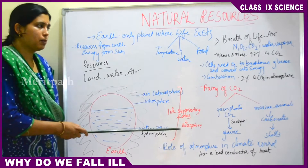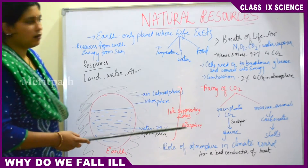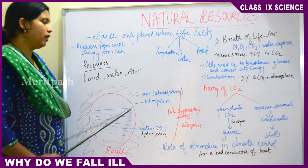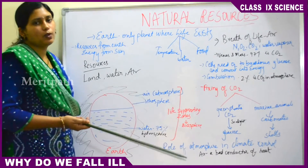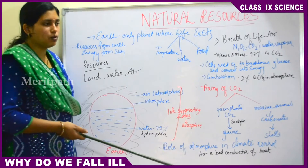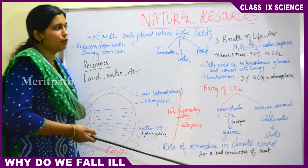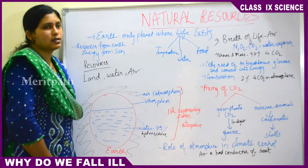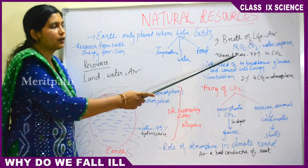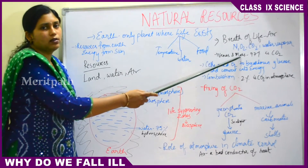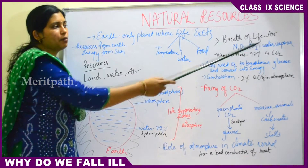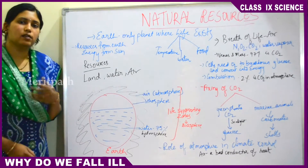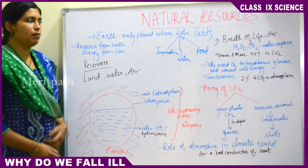Coming to air — air is very necessary; without air we cannot breathe, and we need oxygen for life. This atmospheric air is a mixture of many gases. The major gases present in the atmosphere are nitrogen, oxygen, carbon dioxide, and water vapor. Water vapor is the water evaporated by the sun in the form of droplets that goes into the sky.